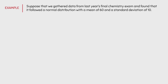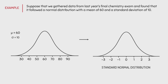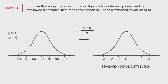Suppose that we gathered data from last year's final chemistry exam and found that it followed a normal distribution with a mean of 60 and a standard deviation of 10. If we were to draw this normal distribution, we would have 60 located at the center of the distribution because it is the value of the mean, and each interval would increase by 10 since that is the value of the standard deviation.